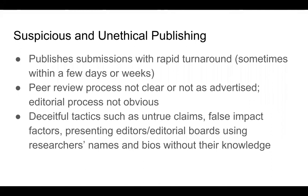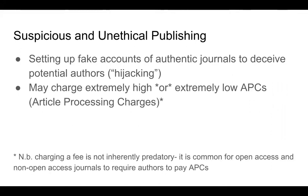So what are the hallmarks of an unethical journal? They may publish submissions with very rapid turnaround, sometimes within a few days or weeks. The peer review process may not be clear or may not be as advertised, or the editorial process may not be obvious. They may use deceitful tactics such as untrue claims, false impact factors, or presenting editors or editorial boards using researchers' names and bios without their knowledge. They may set up fake accounts for authentic journals to deceive potential authors — this is known as hijacking. They may charge extremely high or extremely low APCs, or article processing charges. Charging a fee is not inherently predatory; it is common for open access and non-open access journals to require authors to pay APCs.